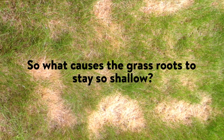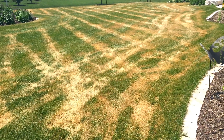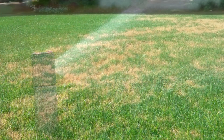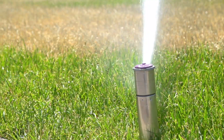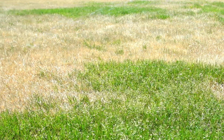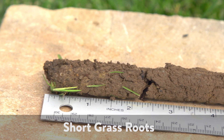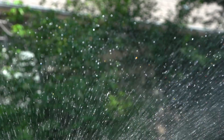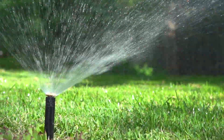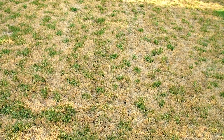So what causes the grass roots to stay so shallow? 95 percent of the time the cause of short grass roots is improper lawn watering. We usually see Ascochyta in lawns that are being watered for a short time period on a daily basis. This shallow and frequent lawn watering teaches the grass's roots to stay shallow because the water is only in the top few inches of the soil. It is kind of counterintuitive, but short grass roots can also be caused by severe over watering, because water replaces air in the soil and without oxygen the grass roots will stay shallow.